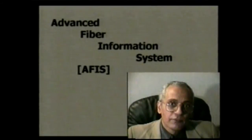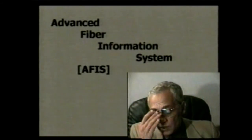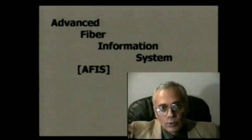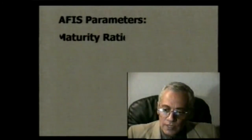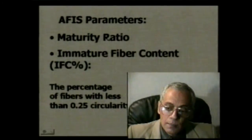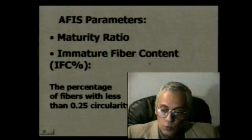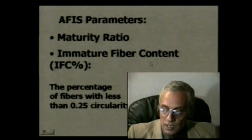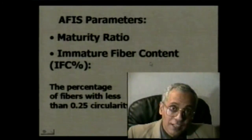The Advanced Fiber Information System (AFIS) provides an optical measure of the degree of circularity of the fibers, using the theta parameter to give you the maturity ratio as well as the immature fiber content, which is typically defined as the percentage of fibers with less than 0.25 circularity or theta value.